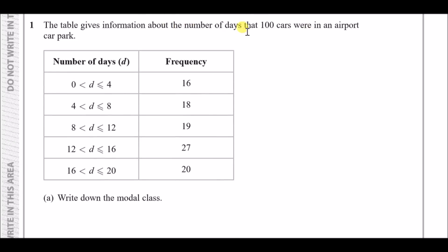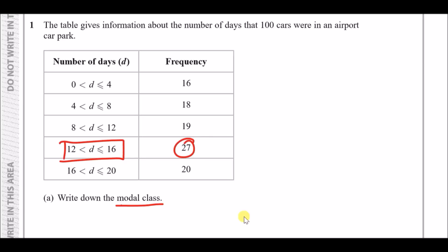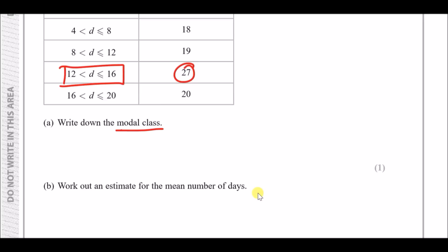The table gives information about the number of days for 100 cars in an airport car park. For example, the first row says between 0 and 4 days there were 16 cars, and between 4 and 8 days there were 18 cars. Part A: write down the modal class. Modal means find the mode — the highest frequency, which is 27, represented by 12 to 16 days. So the answer is 12 < D ≤ 16.